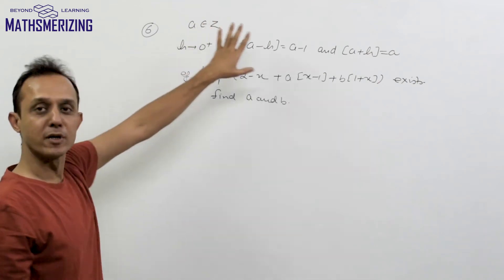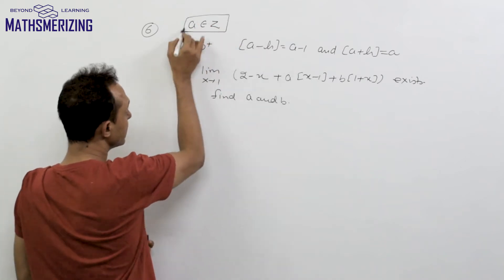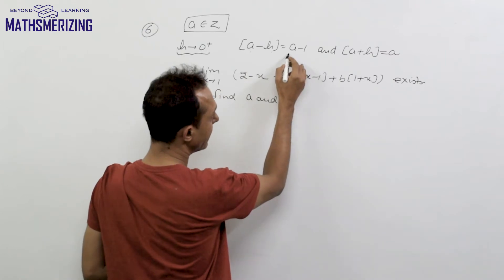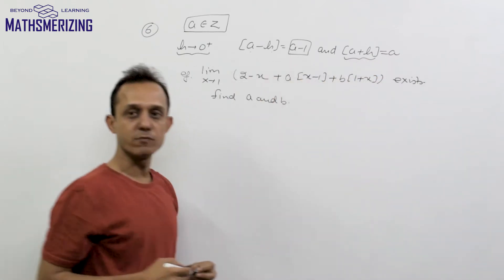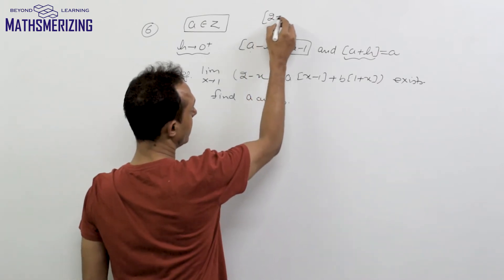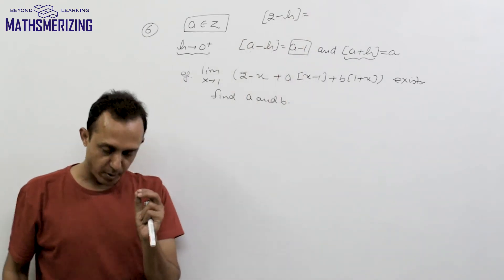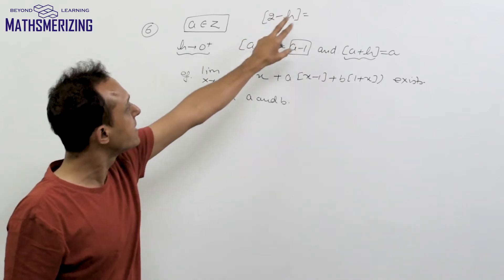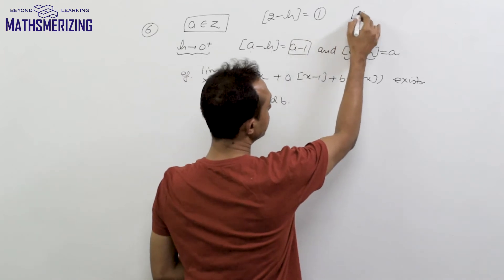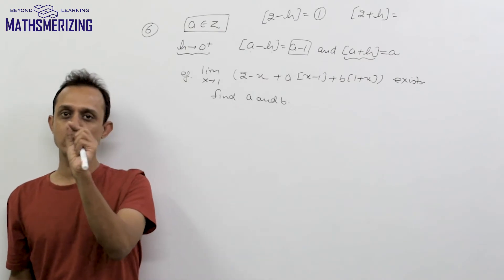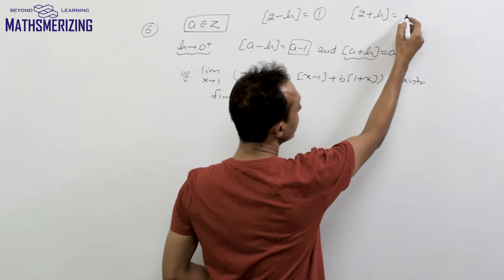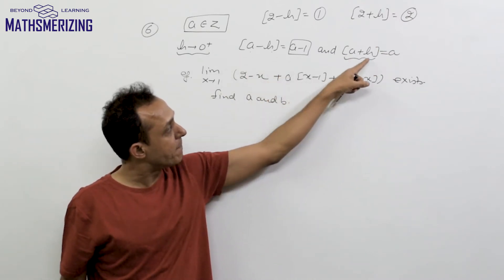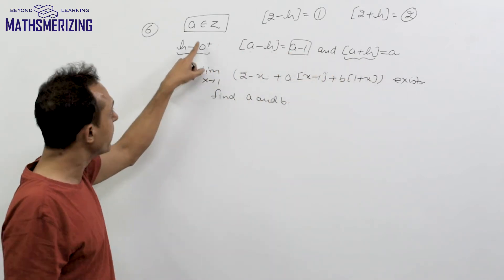The sixth property of the Greatest Integer Function has something to do with limits. Suppose I have any integer 'a' and 'h' is a very small positive number nearly zero. Then the greatest integer function of (a - h) will be (a - 1) and the greatest integer function of (a + h) will simply be 'a'. For example, GIF(2 - h) = GIF(1.9999...) = 1, while GIF(2 + h) = GIF(2.0000...1) = 2.